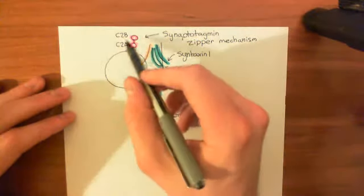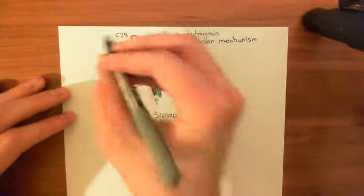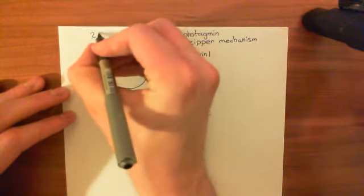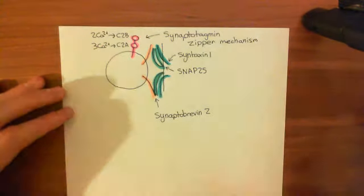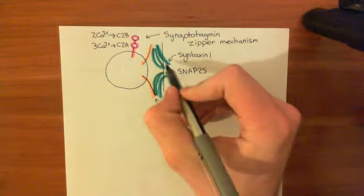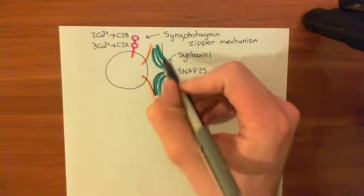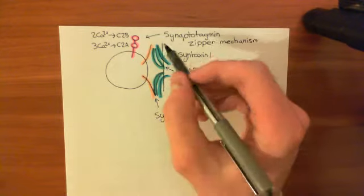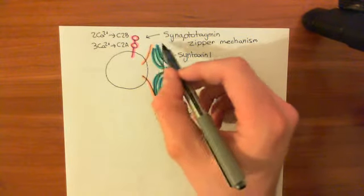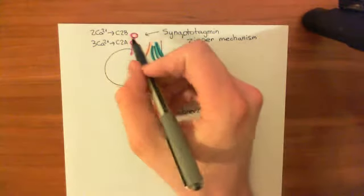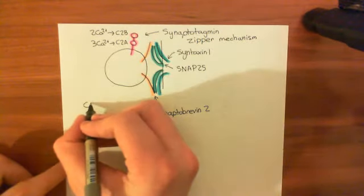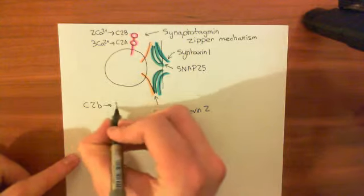We've already seen that when calcium goes up in the vicinity of synaptotagmin, three calcium ions are going to bind to the C2A domain and two calcium ions are going to bind to the C2B domain. This is going to activate synaptotagmin, and we've seen that it will bind to syntaxin-1, the SNAP protein in the target membrane. Secondly, it will bind to phosphatidylserine molecules in the plasma membrane via the C2A domain — specifically C2A binds phosphatidylserine. Now we're going to see that C2B will also bind to PIP2.